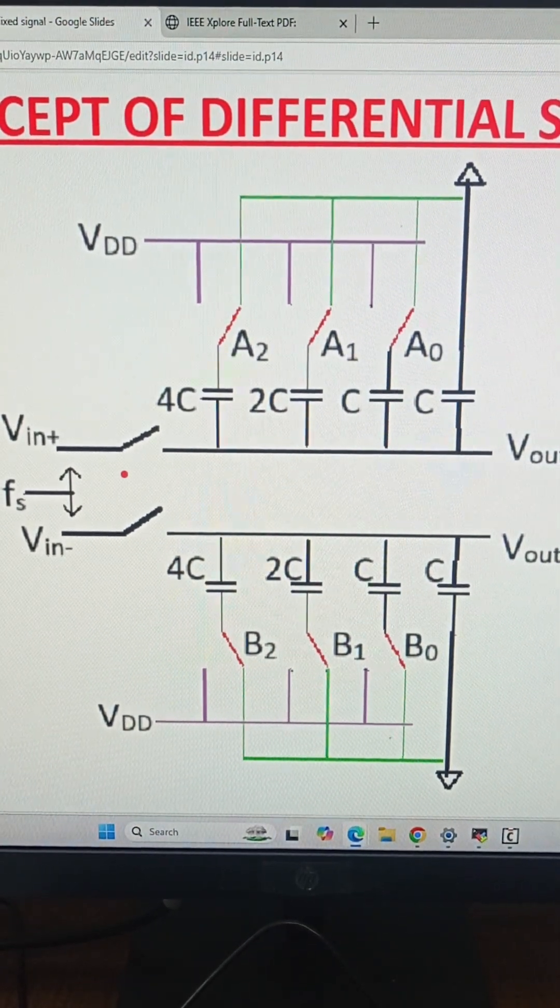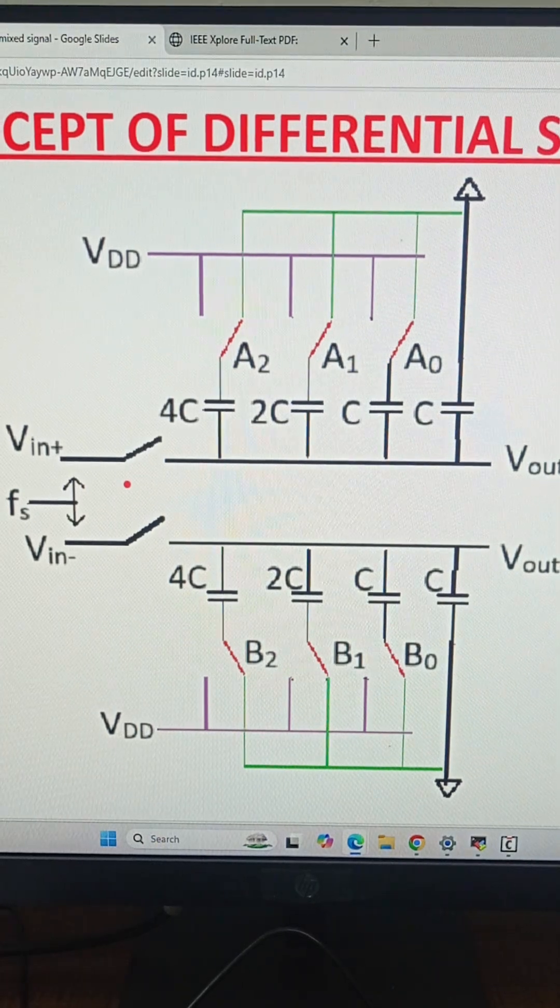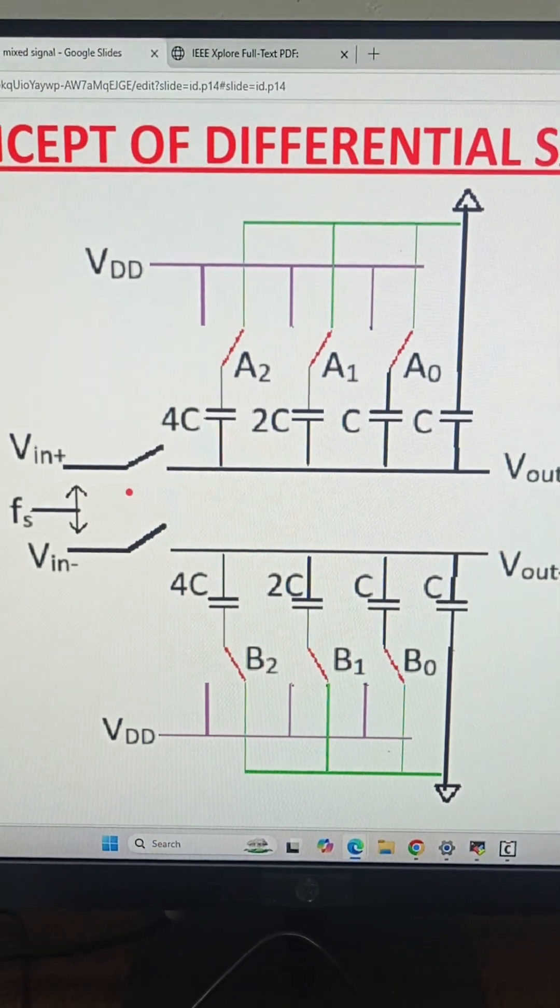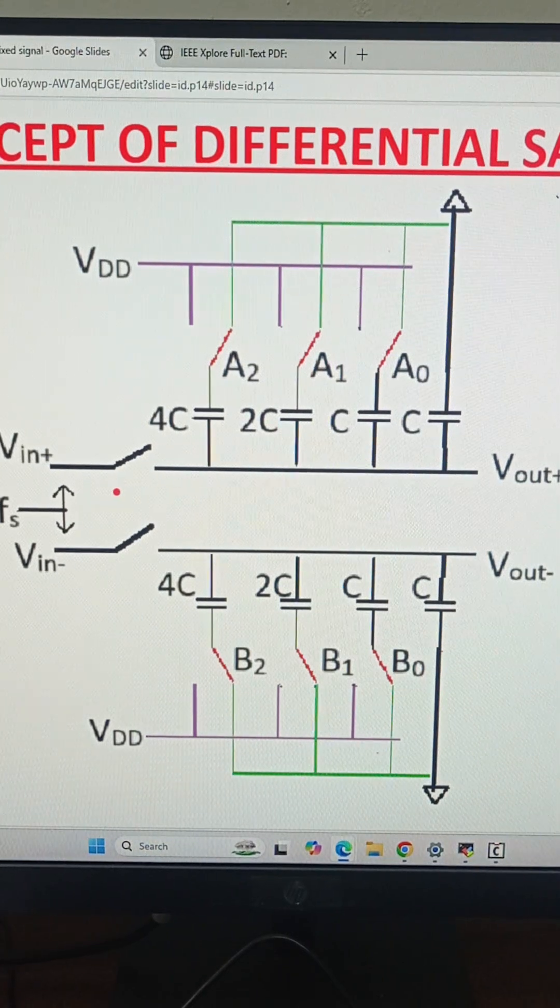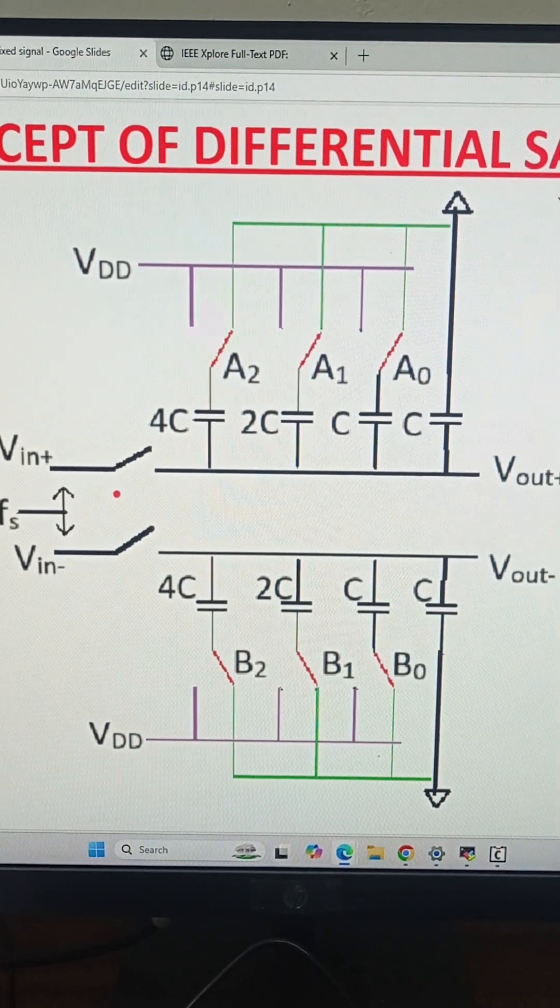There is a differential input voltage of 0.2 volts; V_in+ is greater than V_in-. After sampling the input, the comparison is performed. V_out+ will be greater than V_out- in the first step.